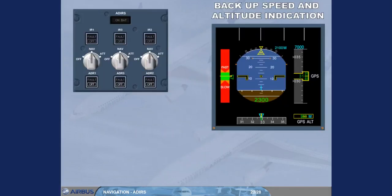In case of unreliable airspeed indications — for example after a 3 ADR failure — the backup speed and altitude indication are available on both PFDs, provided the 3 ADRs have been set to off. The speed scale is replaced by a backup speed scale based on the aircraft's angle of attack information and on the slat-flap configuration. The backup altitude scale is based on GPS altitude information. Due to GPS altitude inaccuracy, the last two digits are double-dashed. The vertical speed indication is not available.